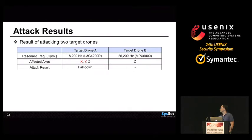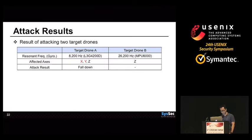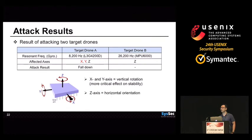Our attack works for target drone A, but not for target drone B. The main difference is the affected axis. Target drone A is affected for all axes, but target drone B is affected only for the Z-axis. We think the reason for this failure is that X and Y axes are more critical for drone stability, because for a drone, the Z-axis means horizontal orientation, whereas X and Y axes mean vertical rotations.